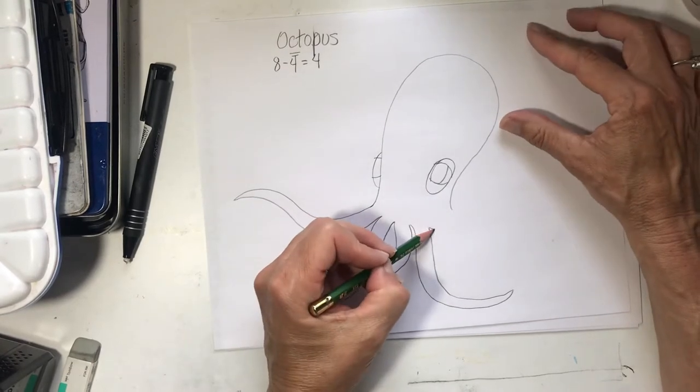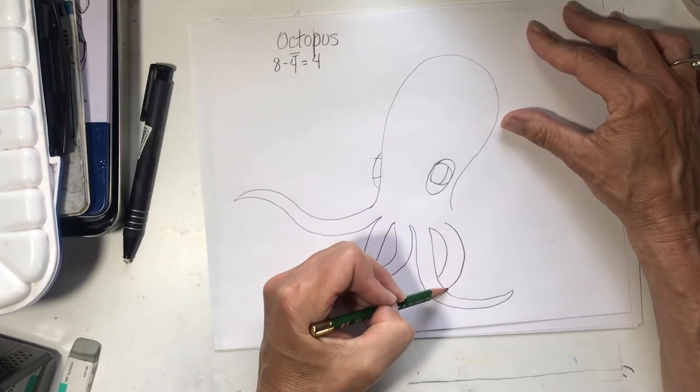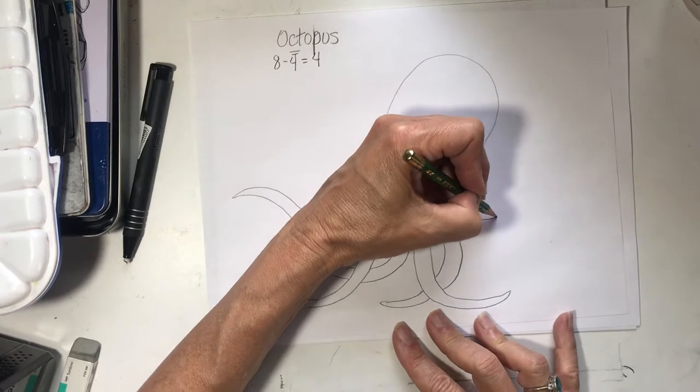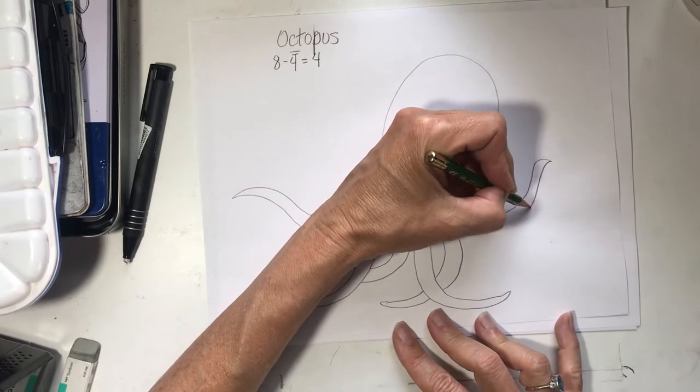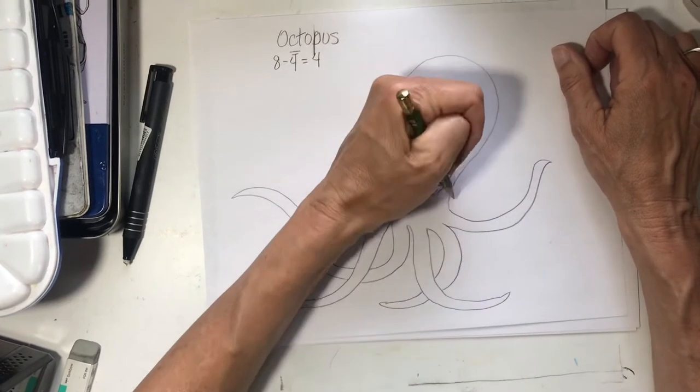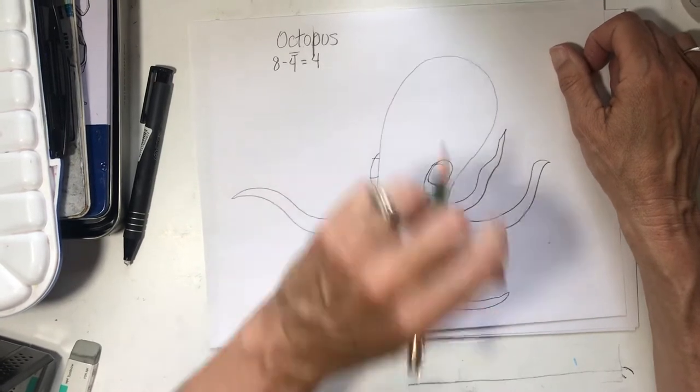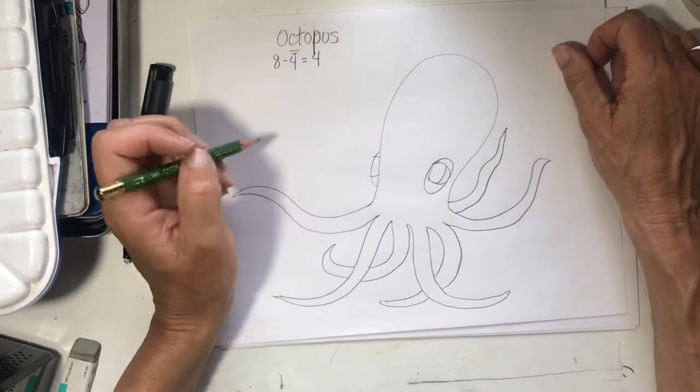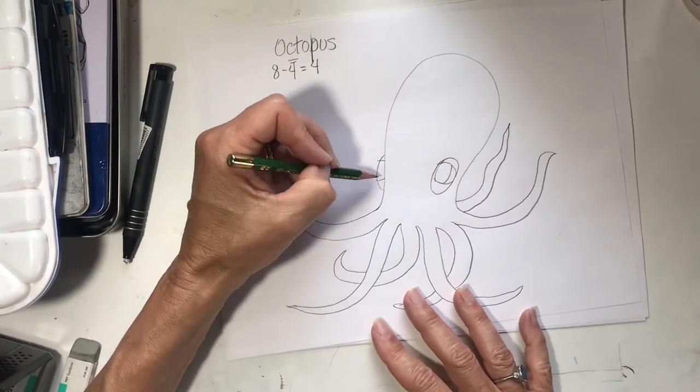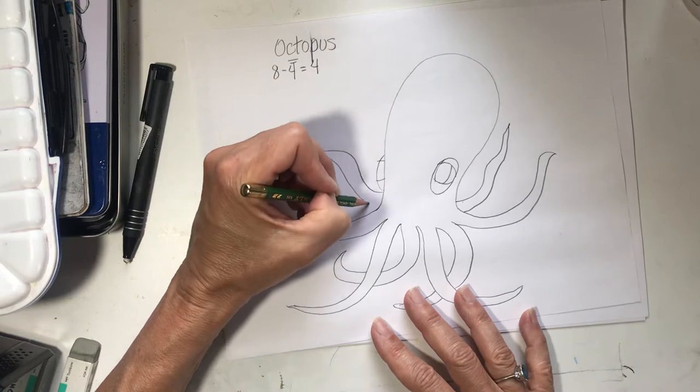So that's one, two, three, four. How many do we have to make? If there's eight and we made four already. Eight minus four equals four. Let's make this one go underneath this guy. That's five. I'll make this one come over here. That's six. So the two remaining will be behind. So we'll just show little parts of it. Seven.